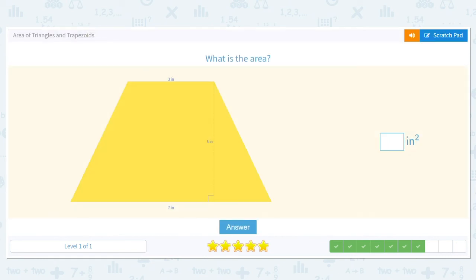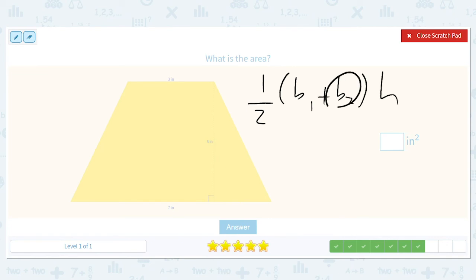And note that the one-half base one plus base two times height formula still works for the triangle. It's just that the top of the triangle is zero, or the top quote base is just zero. So one-half base one plus base two times height. So let's use it.